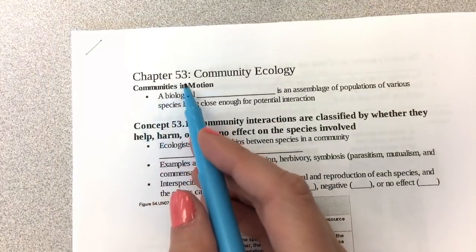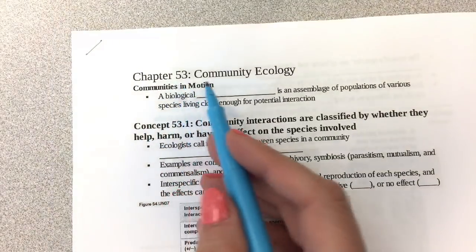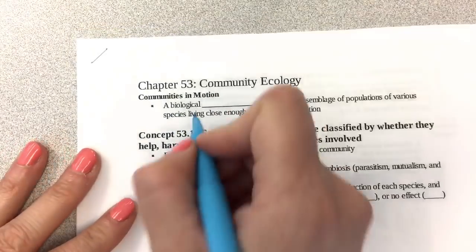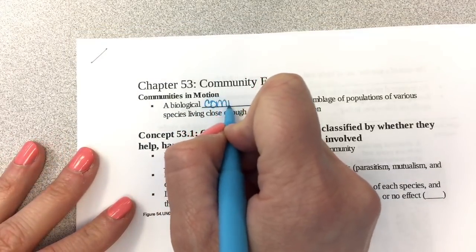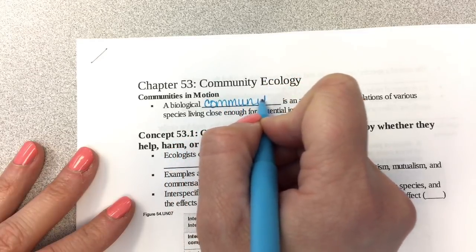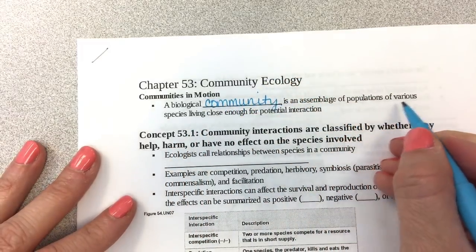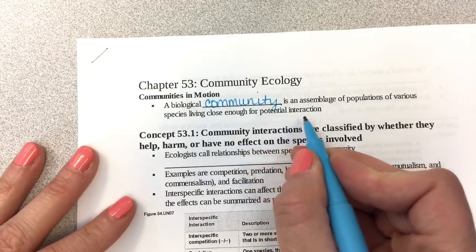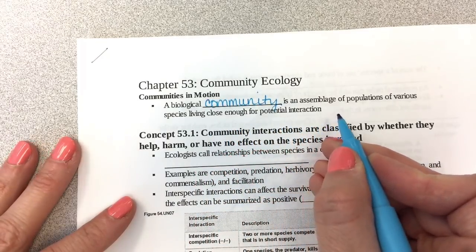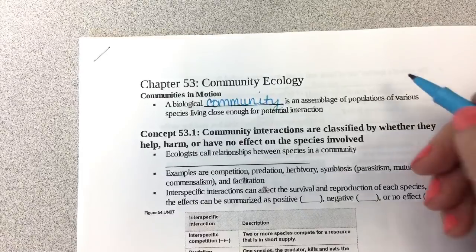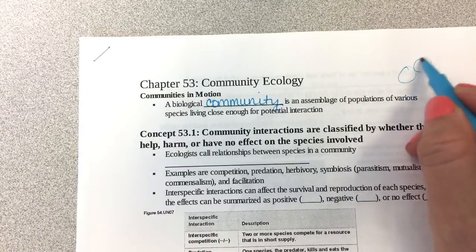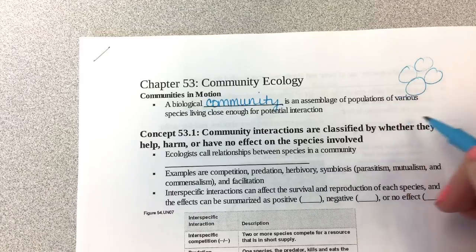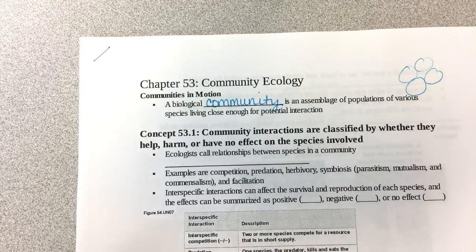Chapter 53 is all about community. A biological community is an assemblage of populations of various species living close enough for potential interaction. So you have a bunch of different populations living together — different species living together — that's a community.